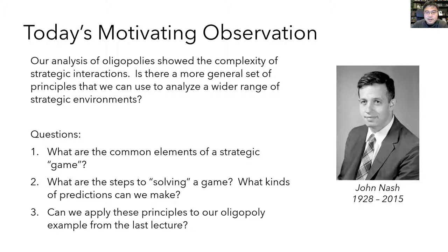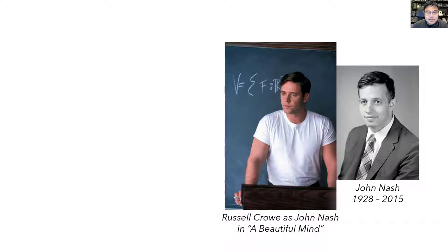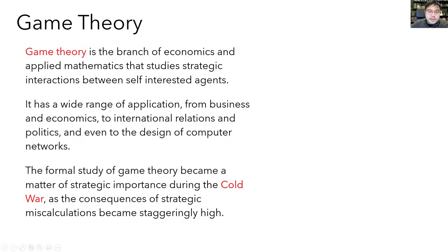The person on the right is John Nash, who is considered the father of modern game theory for his proof of the existence of what's now known as Nash equilibrium. And the handsome man on the left is Russell Crowe, who played John Nash in the Oscar-winning film A Beautiful Mind. The resemblance is pretty good, isn't it?